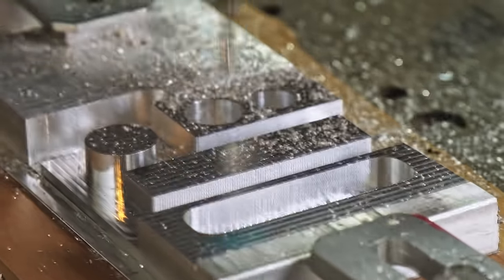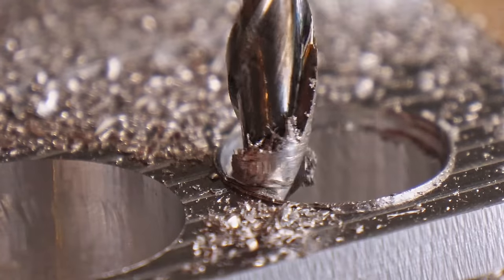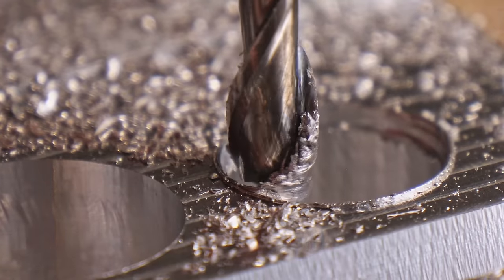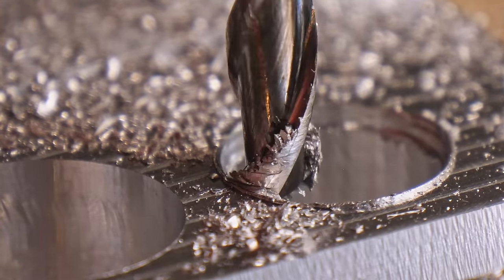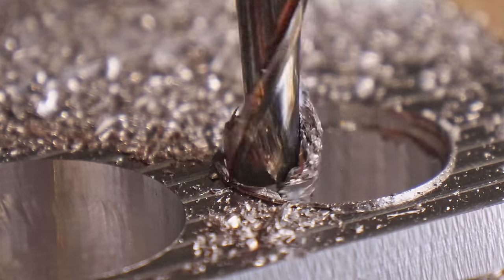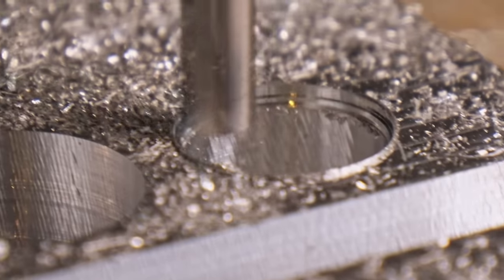Using the same feed rate and rpm as the single flute end mill turned out not to be a good idea, and I ended up destroying the end mill as it gummed up with the chips, and I think that's because the chip load was too low, because I kept the rpm the same for the two flute end mill as the one flute end mill.